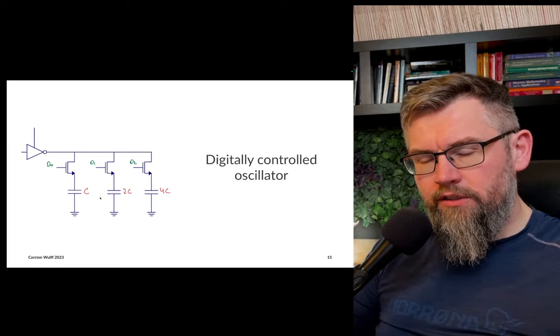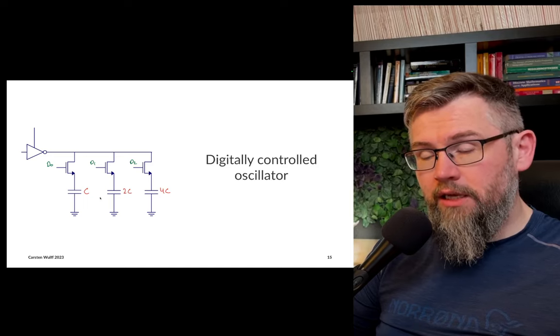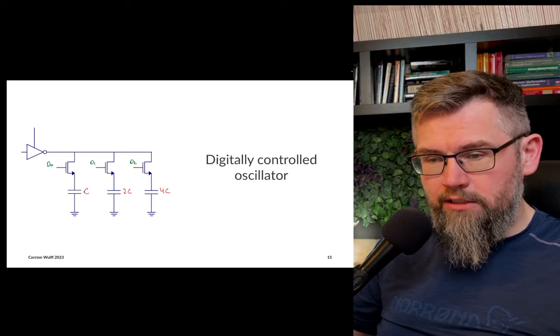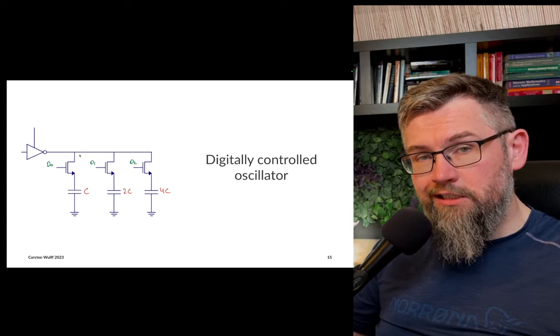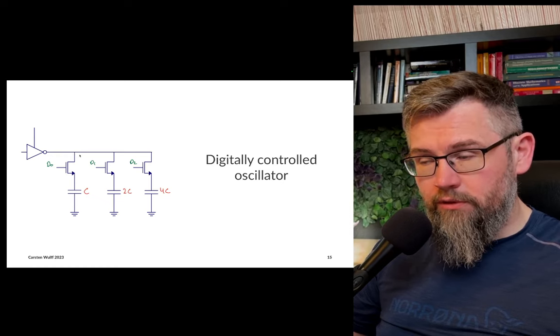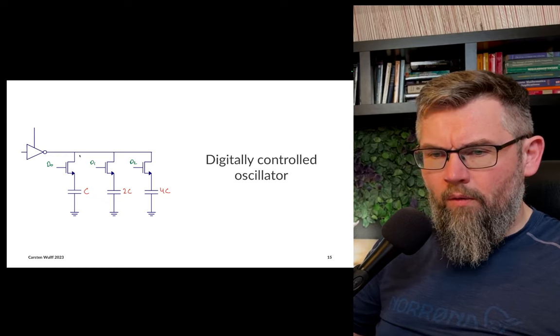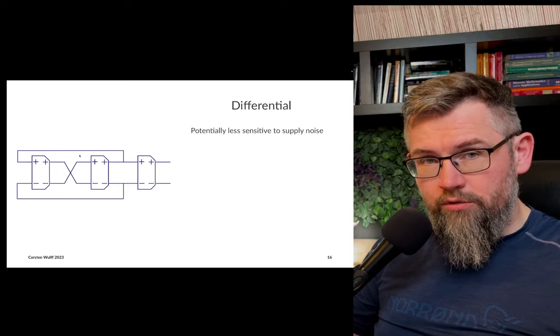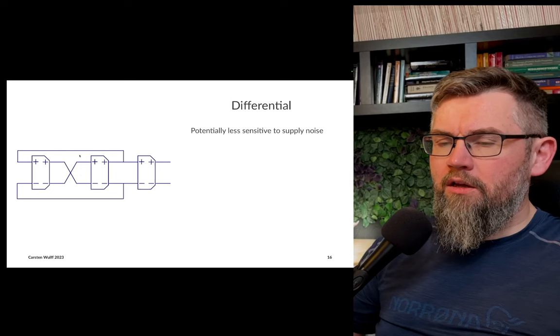We can also change the ring oscillator into a digitally controlled oscillator, and one way to do that is to change the capacitance. By changing the capacitive load on the output of every single stage, we can actually digitally control the oscillation frequency. And there are many other ways to do the control loops or the control node.